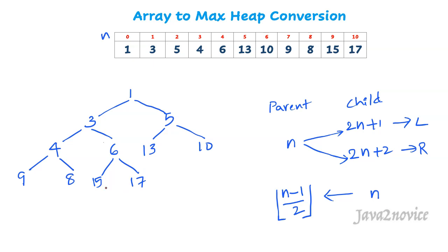Similarly, 15 is also a leaf node — no changes are required. In general, no heapification is required for leaf nodes. We can apply heapification only for non-leaf nodes, which starts from node 6 onwards.